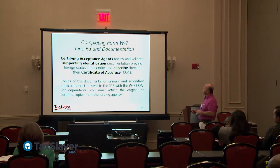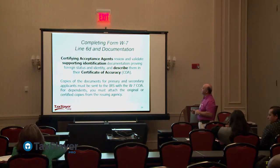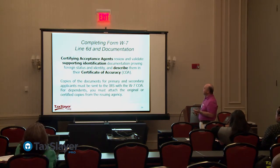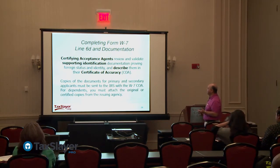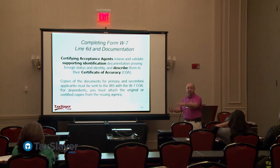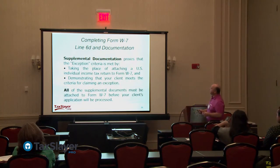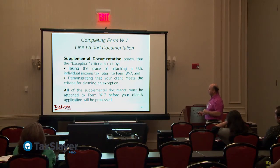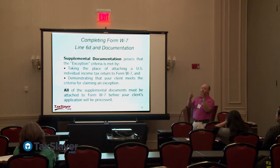Certifying acceptance agents review and validate documentation and describe it in a Certificate of Accuracy (COA). Copies of documents for the primary and secondary must be sent to the IRS with this COA; for dependents, attach the original or certified copies. The certifying acceptance agent is putting their name on the line validating what they've seen from the applicant. Be sure you're on the up and up — there are severe penalties if fraud is found.